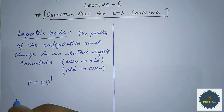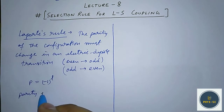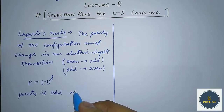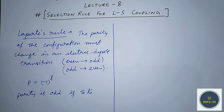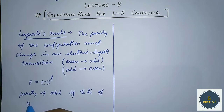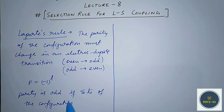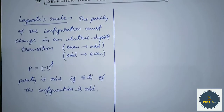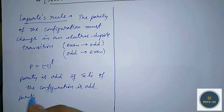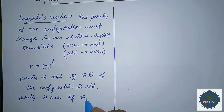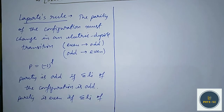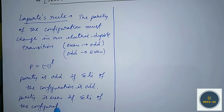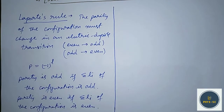The parity is odd if the sum of the individual azimuthal quantum numbers Lᵢ of the configuration is odd. The parity is even if every azimuthal quantum number of the configuration is even. Laporte's rule is the most basic rule when we try to find the selection rules.